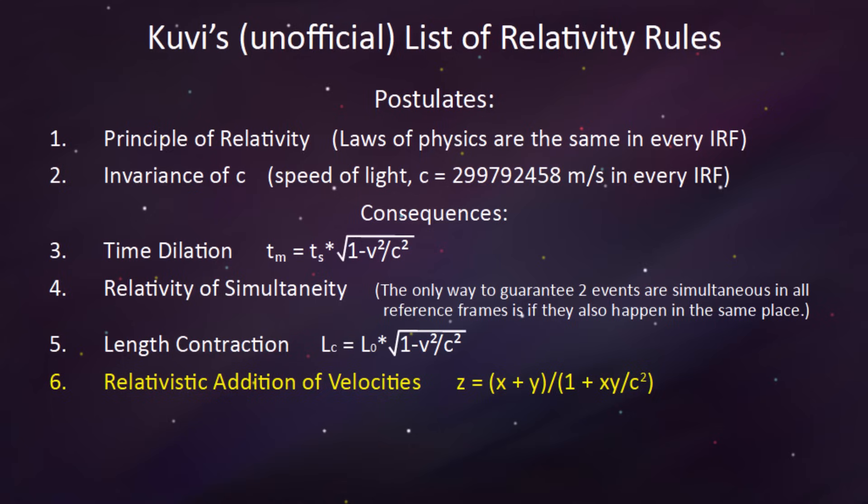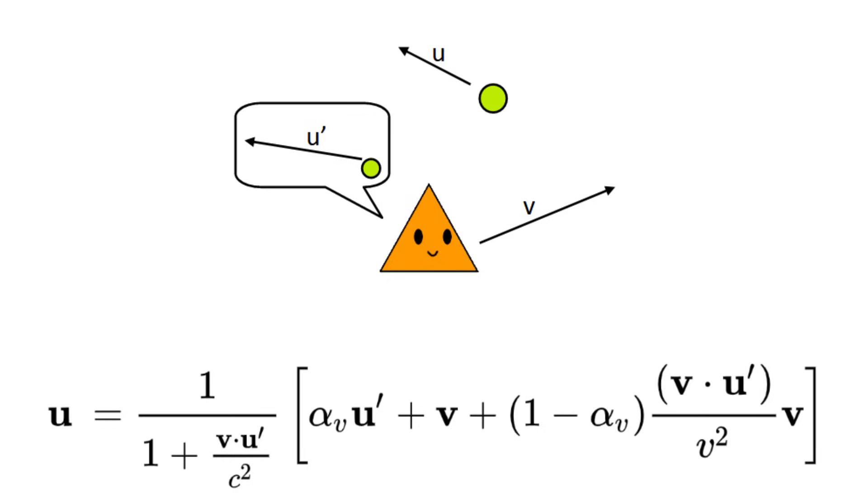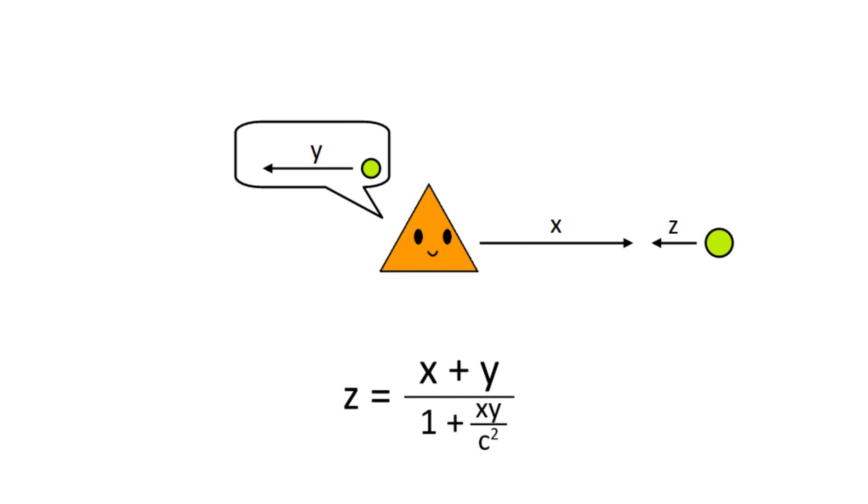And we can now add it to the list of rules as number 6. There is technically a much more complicated full version of the formula that's required if you have multidimensional velocity vectors and non-colinear directions, but the vast majority of relativity examples only use one spatial dimension, in which case the short version is sufficient.